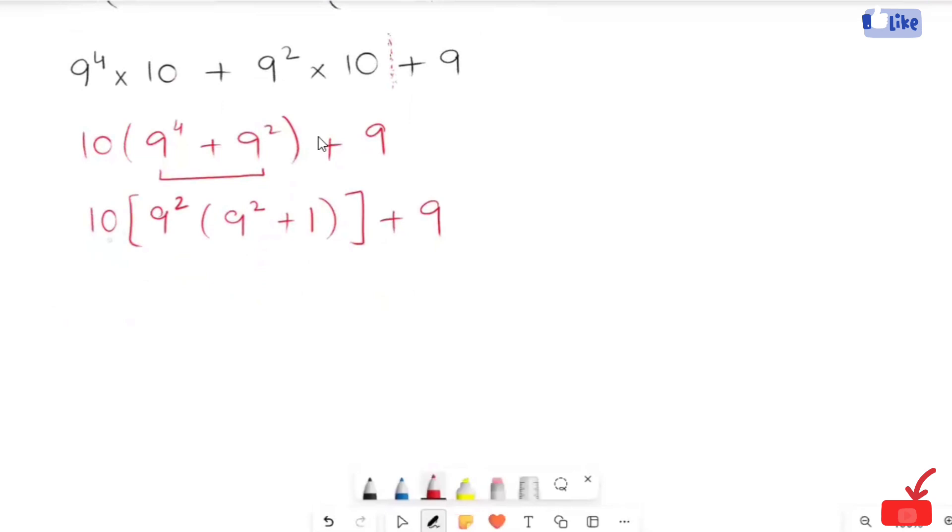As I solve this expression, so I will get 9 squared times 81, and here 9 squared times 81 plus 1 plus 9. Now, the next expression we get is 10 times 82 plus 9.